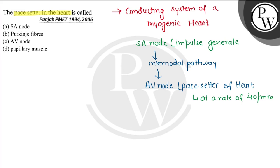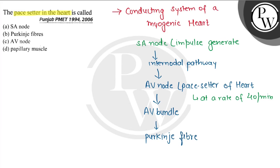Traveling from the AV node, it reaches our Bundle of His — which we also call the AV bundle — and further then to the Purkinje fibers, which carry it to the entire ventricular musculature. Here we are being asked who the pacemaker is.